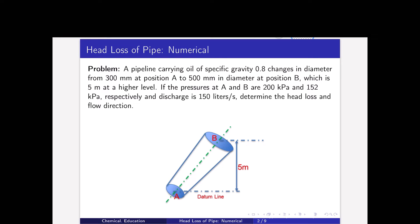Here the picture is given which states the problem description. At point A, the diameter is given as 300 mm. Point B diameter is given as 500 mm, and from A to B the height difference is 5 meters. The pressures at point A and B are also given: 200 kilopascal and 152 kilopascal respectively. The discharge is given as 150 liters per second.